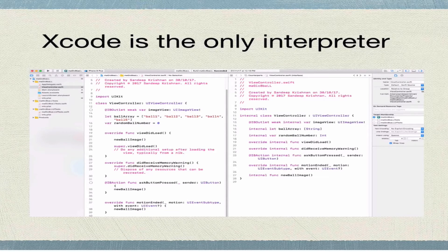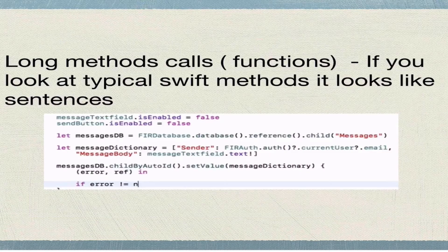The third reason is that Xcode is the only interpreter for Swift. With Python, you can have many interpreters — it's an open source language. Though Swift is also open source, it effectively only has one interpreter called Xcode. Xcode is a great interpreter, no doubts about it, but there's only one.